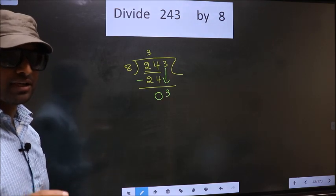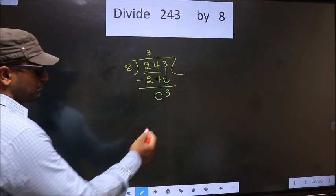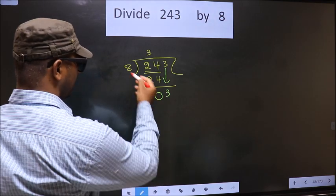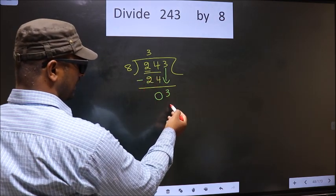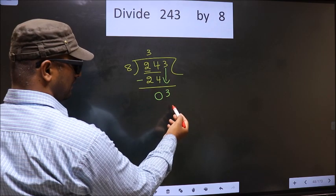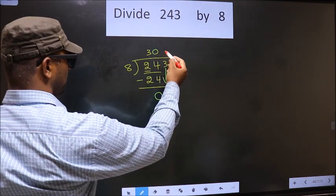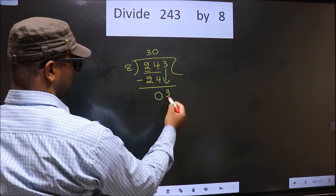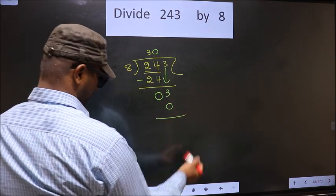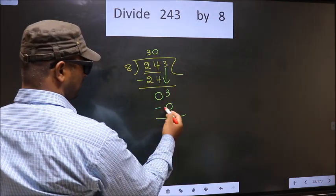If we write 8 here, that is larger than 3. So what we do is we take 0 here. 8 into 0 is 0. Now you subtract: 3 minus 0 is 3.